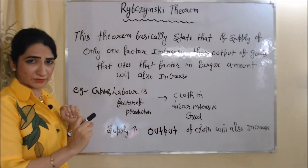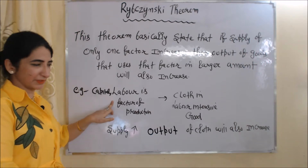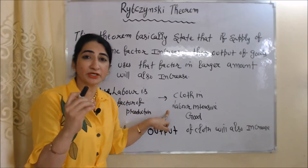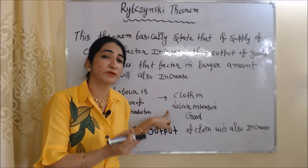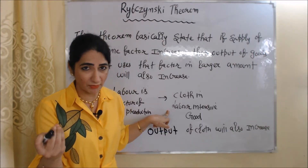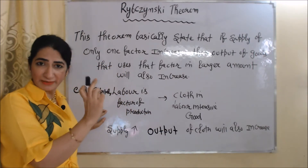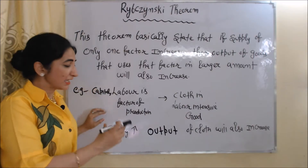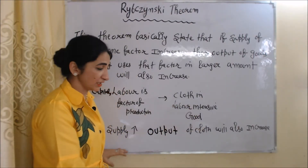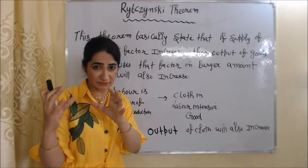For example, we have two factors of production: capital and labor. Cloth is a labor-intensive good — in production of cloth, we use labor in larger amount. Now suppose only supply of labor increases. As a result, output of cloth will also increase, because cloth is labor-intensive goods.